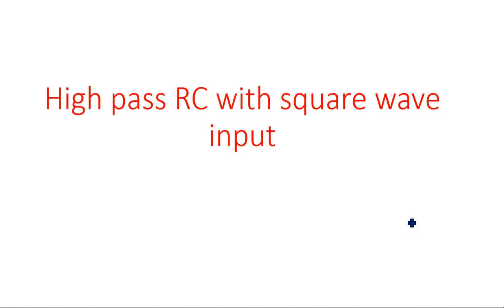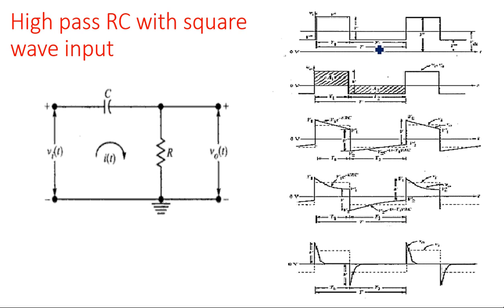In this video I am going to explain the behavior of a high-pass RC circuit when a square wave is applied. I have taken the step input first, then the pulse input, and now extending further to the square wave. The square wave is an unsymmetrical waveform where the on-period is not equal to the off-period. If the on-period equals the off-period, it becomes a symmetrical waveform with different expressions.